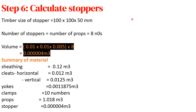The stoppers hold the props firm. The timber size for the stopper is 100 × 100 × 50 mm (length × width × thickness). The number of stoppers equals the number of props, which is 8. Volume = 0.10 × 0.10 × 0.05 × 8 = 0.004 m³.